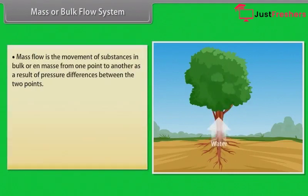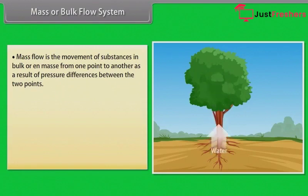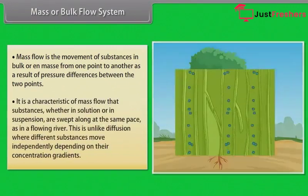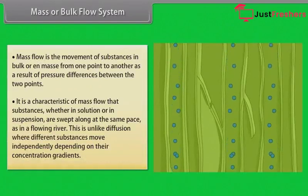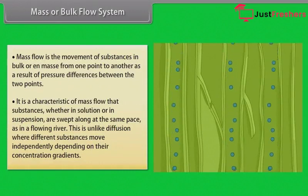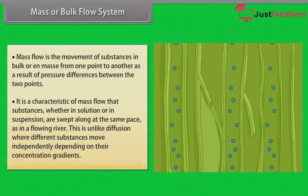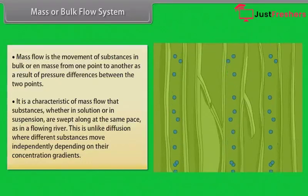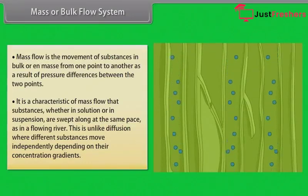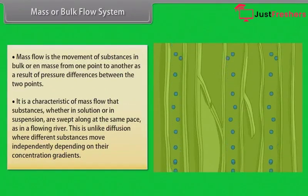Mass flow is the movement of substances in bulk or en masse from one point to another, as a result of pressure differences between the two points. It is a characteristic of mass flow that substances, whether in solution or in suspension, are swept along at the same pace, as in a flowing river. This is unlike diffusion, where different substances move independently depending on their concentration gradients. Bulk flow can be achieved either through a positive hydrostatic pressure gradient — for example, a garden hose — or a negative hydrostatic pressure gradient — for example, suction through a straw.